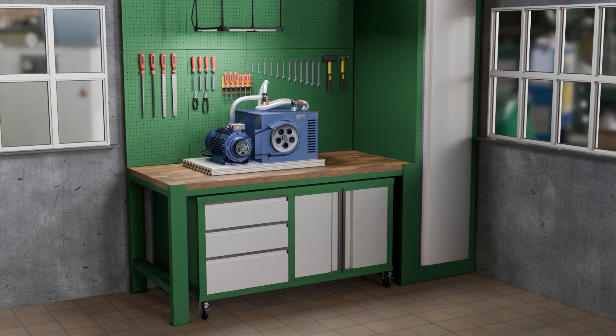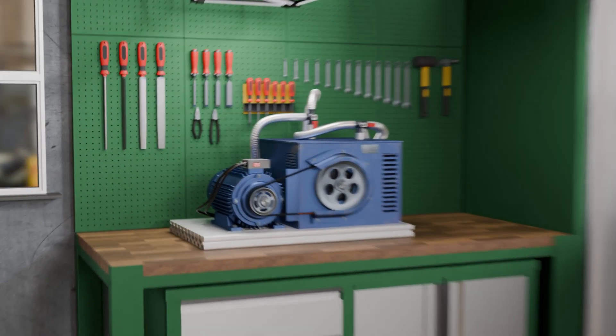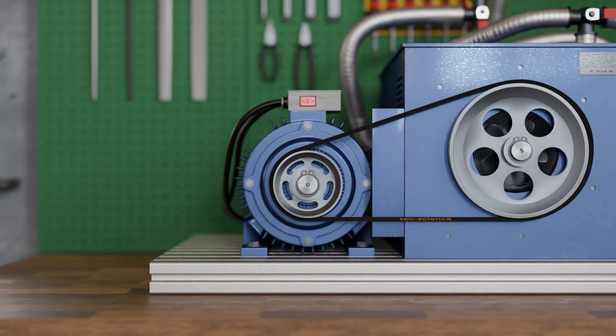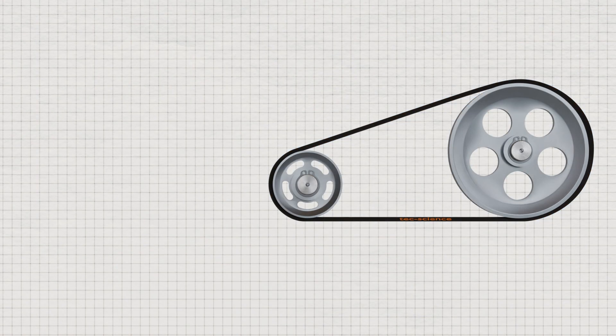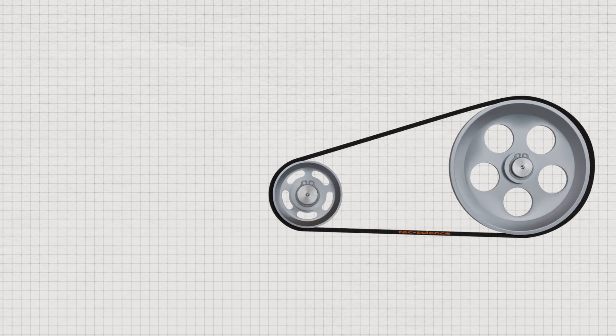In this video, we derive the formula for calculating the belt length and the bearing force for belt drives. When designing belt drives, it is necessary to determine the required belt length for a given pulley diameter and pulley distance. The basis for calculating the belt length is the mounted state of the belt on the pulleys.